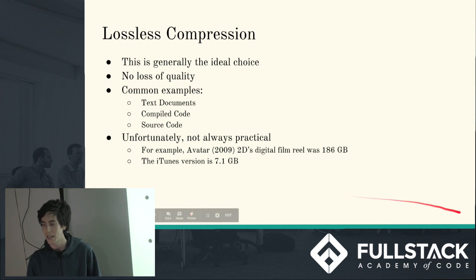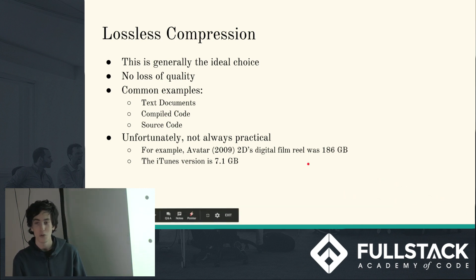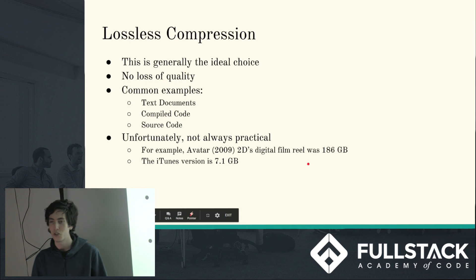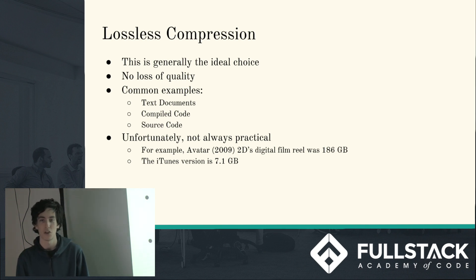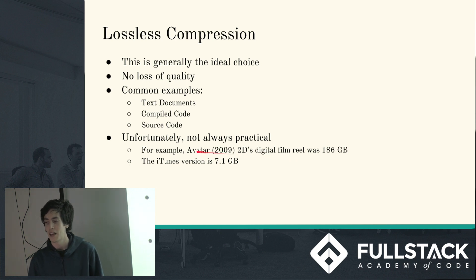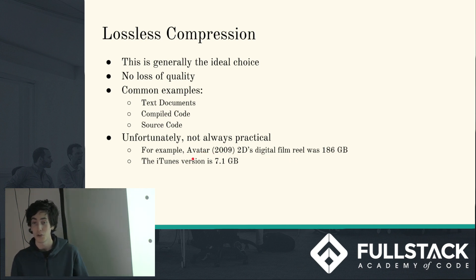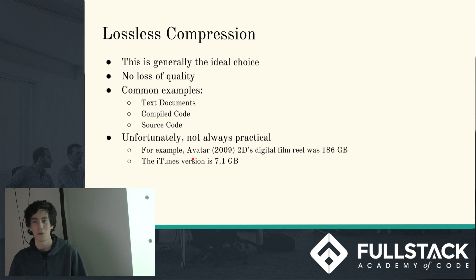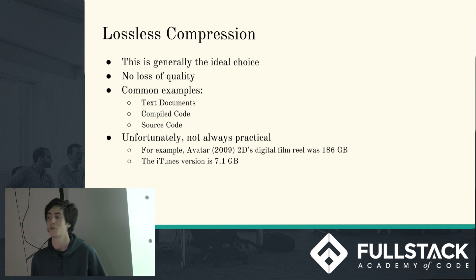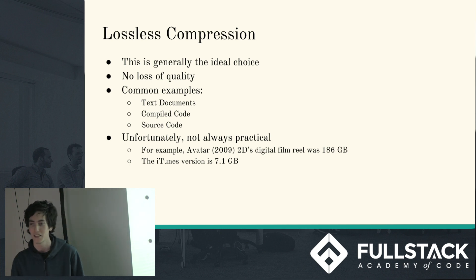A great example is Avatar from 2009. The digital film reel was 186 gigabytes, and that was losslessly compressed. As opposed to the iTunes version, which is lossily compressed at 7.1 gigabytes. It's a bit of an extreme example but it gives a good reason for why you really need this stuff.